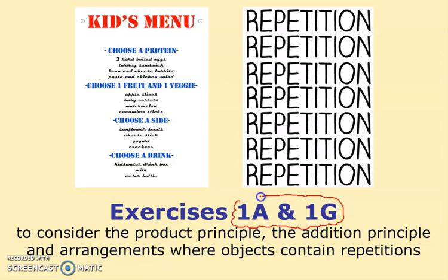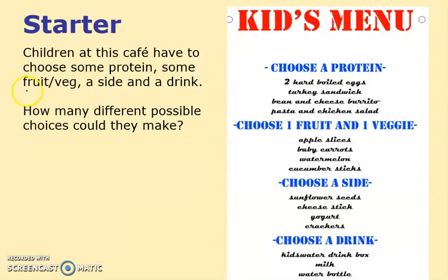I want to get onto the harder stuff, which can be very difficult, quicker than we otherwise would have done. So we're going to look at exercise 1A and 1G. It involves the product principle, the addition principle, and a variety of different ways to make arrangements.